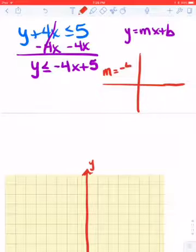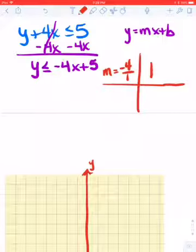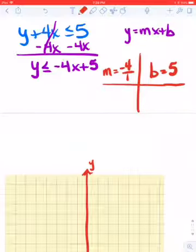So my m is negative 4 over 1. My b value is 5.